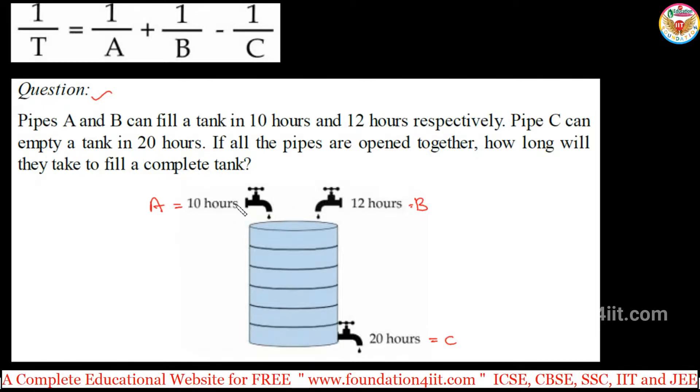So let's take A equals 10 and B equals 12. Pipe C empties in 20 hours. If only tap A is on, it fills in 10 hours. Tap B fills in 12 hours individually. Tap C empties in 20 hours. If all three are on together, how long will they take?